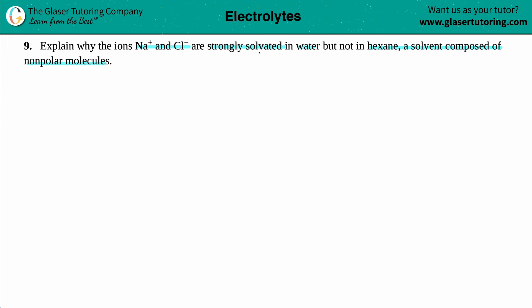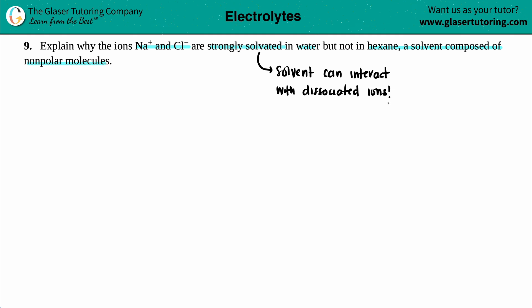When we're talking about solvation, or if something is being solvated, this just means that your solvent can interact with dissociated substances, and specifically, mainly if you're talking about water, your dissociated substances are going to be ions. Our solutes — our small little substances — are going to be solvated by the solvent.